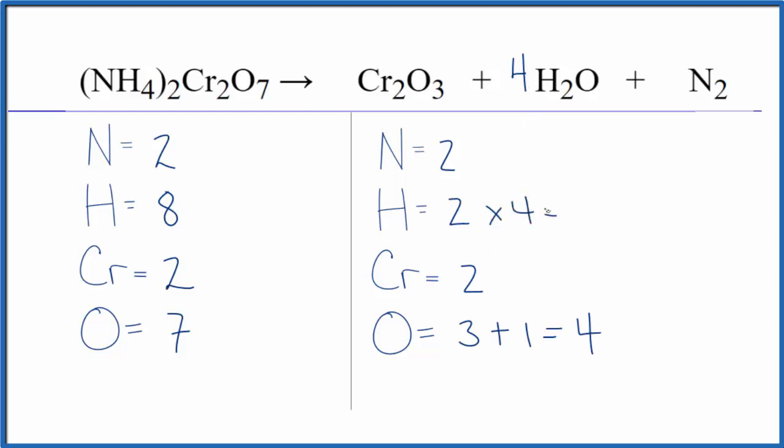That would give us eight hydrogen atoms. Then we need to update the oxygens, so we have our three plus one times four. That gives us four, and that gives us seven, and we've actually balanced this equation.